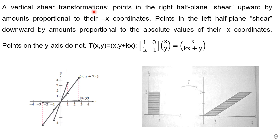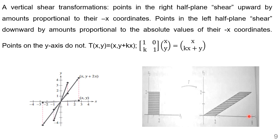Now we look into vertical shear transformation. We multiply with the matrix [[1, 0], [k, 1]]. When we multiply with (x, y), we get a new vector with coordinate (x, kx + y). For example, with k equal to 2, we get a new vector that is (x, y + 2x). Pictorially, the point (0, 2) and (2, 0) can be observed. If k value is equal to 4, it gets stretched to 8. That is why we call this a vertical shear transformation.